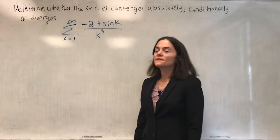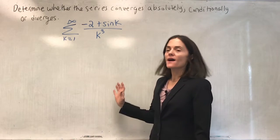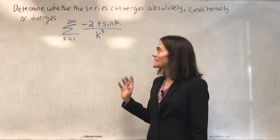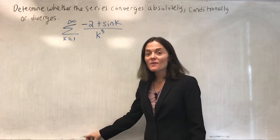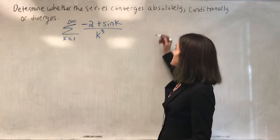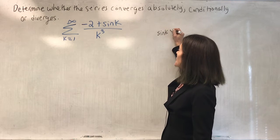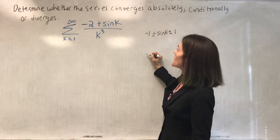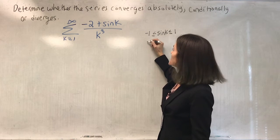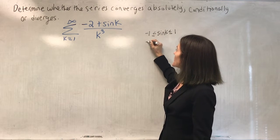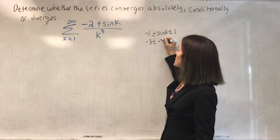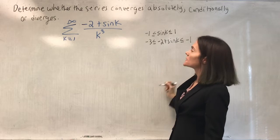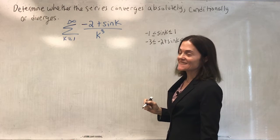Here's our next example. If you look at this, it's not alternating. What do we know about sin(k)? sin(k) is always between -1 and 1. So if we add -2, we get -3 ≤ (-2 + sin k) ≤ -1. This series is always negative.